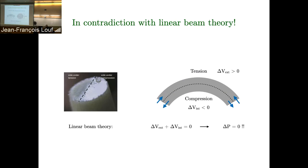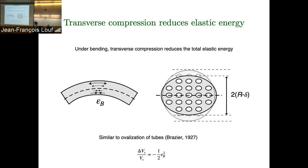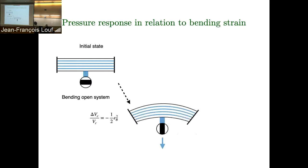The explanation is that when you bend a porous material, it is energetically favorable to bring all parts far from the neutral axis closer to the center — like a straw that becomes slightly oval before it buckles. Because there is fluid inside, it cannot shrink, so pressure increases instead. This argument, found by Brazier about a hundred years ago, links the relative change of channel volume to the bending strain with a prefactor of minus one half.